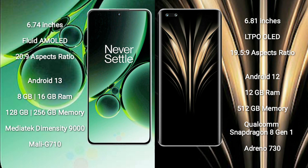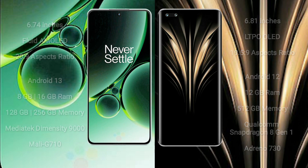OnePlus Nord 3 comes with 8GB or 16GB RAM and 128GB or 256GB internal storage, powered by the MediaTek Dimensity 9000 processor with Mali-G710 GPU. Honor Magic 4 Ultimate comes with 12GB RAM and 256GB internal storage, powered by the Qualcomm Snapdragon 8 Gen 1 processor with Adreno 730 GPU.